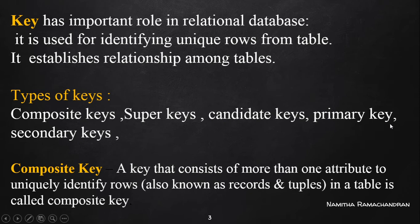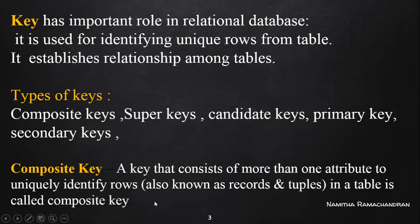The types of keys available are: composite keys, super keys, candidate keys, primary keys, and secondary keys. A composite key is a key that consists of more than one attribute used to uniquely identify rows in a table. This collection of attributes identifies each row — also called a tuple — uniquely.